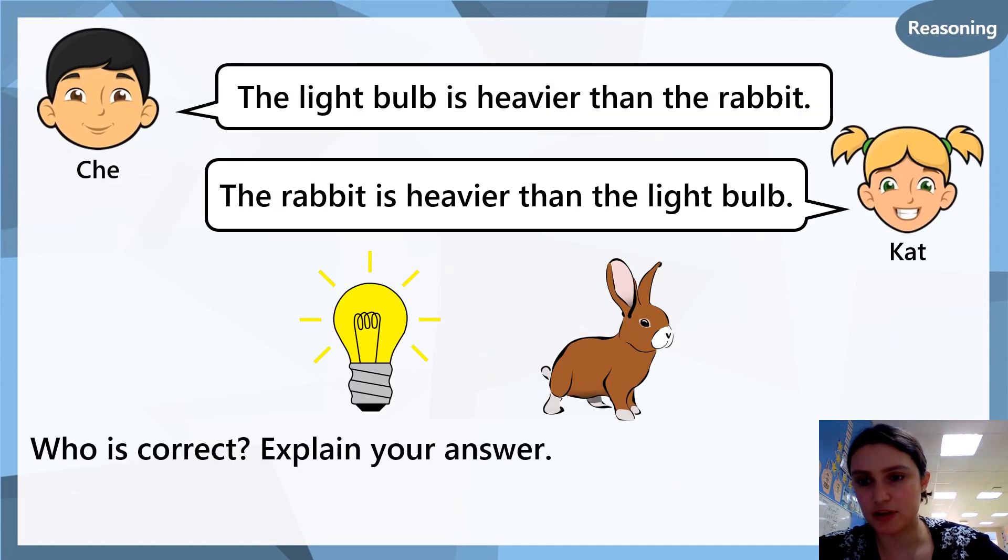Now we have two children here who are talking about a light bulb and a rabbit. Shea is saying that the light bulb is heavier than the rabbit, and Kat thinks that the rabbit is heavier than the light bulb. Who do you think is correct? Explain your answer. You can either write this down on your paper or you can take a video and send it to your teacher. Who do you think is correct?